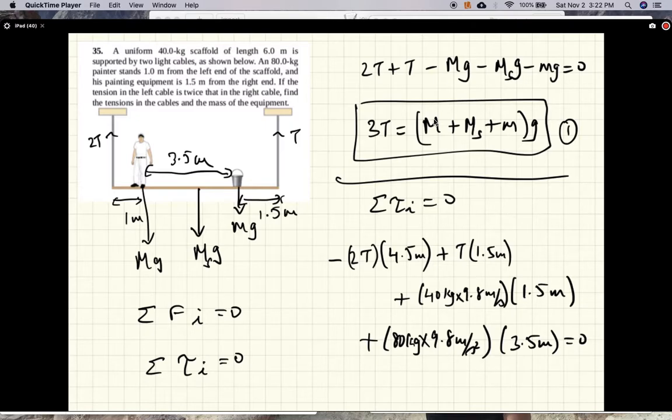And this should add up to 0. So tension is the only unknown in this equation, and we should be able to solve this. Let me simplify this, so this is minus 9T plus 1.5T, so 7.5T is equal to the rest of this stuff.